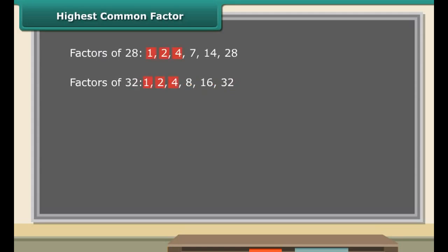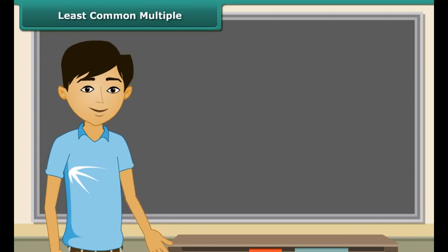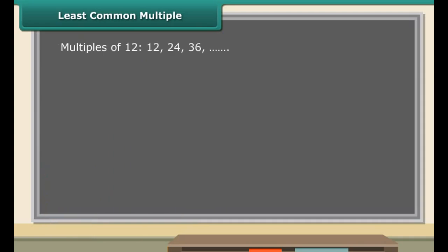Now that you know what common factors are, let us find the highest common factor of two numbers. Consider the numbers 28 and 32. The factors of 28 are 1, 2, 4, 7, 14, and 28. The factors of 32 are 1, 2, 4, 8, 16, and 32. The common factors are 1, 2, and 4. It is clear that the highest common factor among these is 4. Therefore, the highest common factor (HCF) of two or more given numbers is the highest of their common factors. It is also known as greatest common divisor, or GCD.